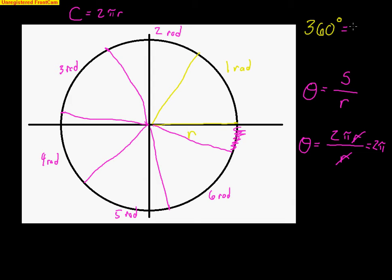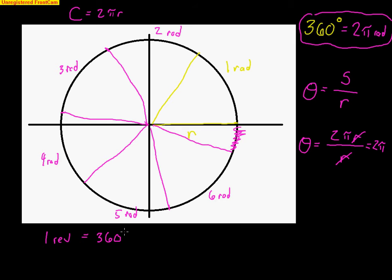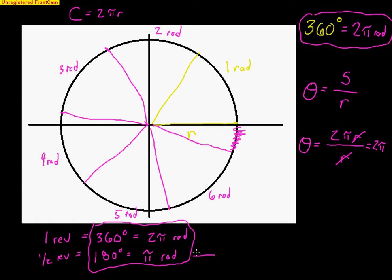So we know one full circle is 360 degrees, but one full circle is also 2π radians. This is our big conversion factor — just like 12 inches is 1 foot or 5,280 feet is 1 mile. One full revolution equals 360 degrees, which equals 2π radians. We tend to reduce this: half a revolution is 180 degrees, which equals π radians. So 360 degrees equals 2π radians, or equivalently, 180 degrees equals π radians.